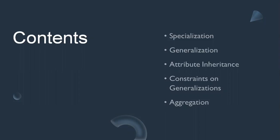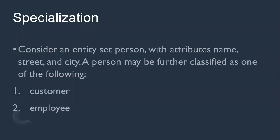First is specialization. Consider an entity named 'person'. A person is a single entity, but in some cases it can be further classified — the person may be a customer and the person may be an employee. Depending on a particular condition, person is categorized into two different parts: customer and employee. This process is called specialization.